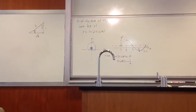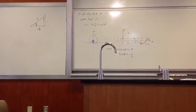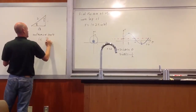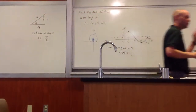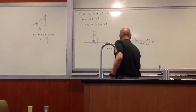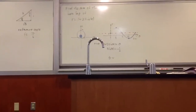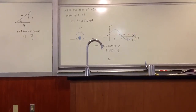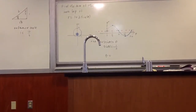Sine is the opposite over the hypotenuse. So sine of pi over 6 is 1 over 2. Our reference angle is pi over 6. Sine is negative in which quadrants? Quadrants 3 and 4. So I need to know which two angles are going to give me sine of theta equals negative one half. 7 pi over 6 and 11 pi over 6.